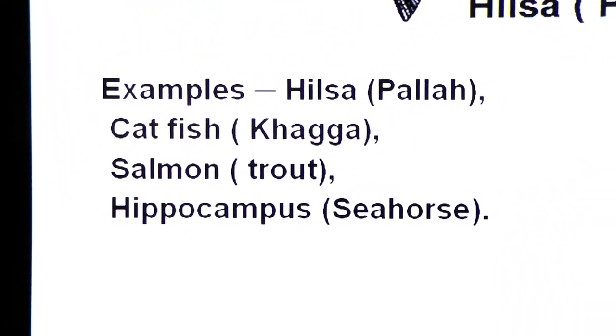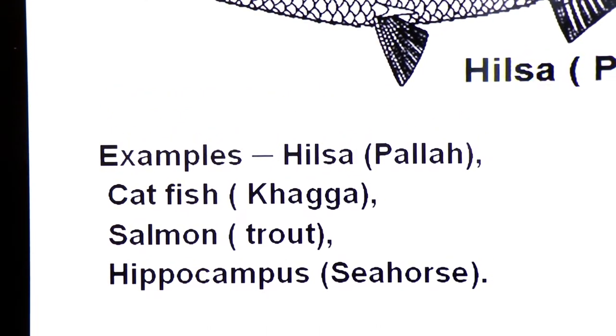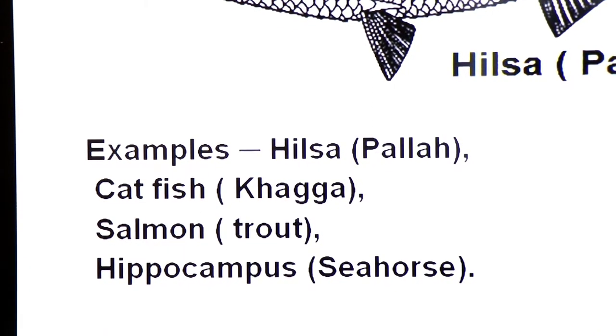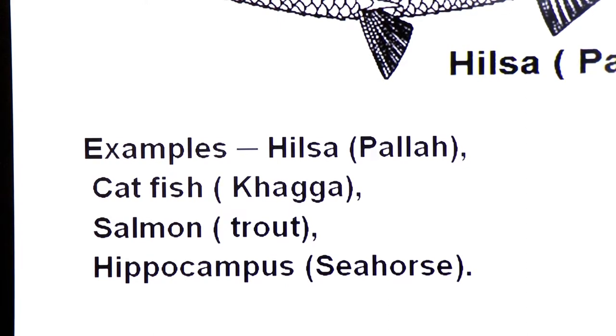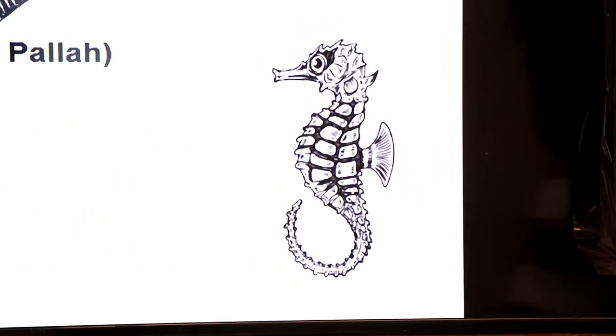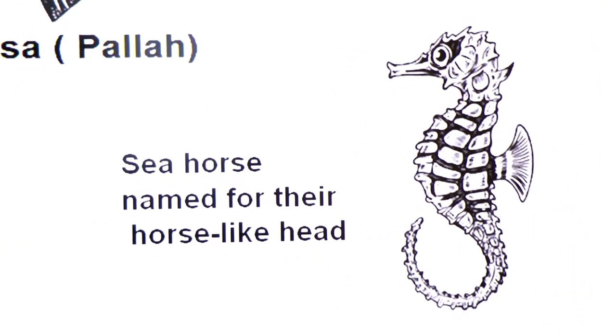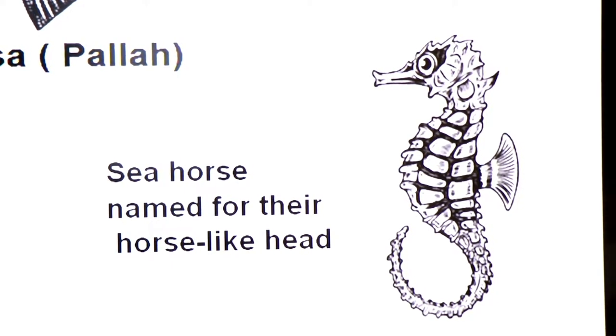And what are the examples, famous examples of bony fishes? Hilsa commonly known as Palla, catfish commonly known as khaga, salmon known as trout, and dear students, hippocampus sea horse. Look at the diagram. This is hippocampus sea horse. And why this fish is named sea horse? Sea horse named for their horse-like head.